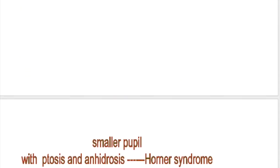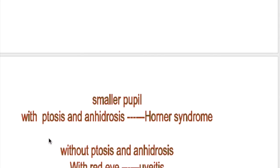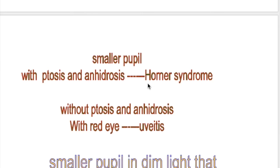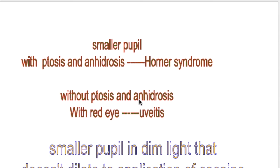A smaller pupil may occur with or without ptosis and anhidrosis. A smaller pupil with ptosis and anhidrosis is due to Horner syndrome. Horner syndrome may also be caused by an apical lung tumor that presses on the sympathetic fibers that dilate the pupillary dilator; this occurs with Pancoast tumor of the lung.